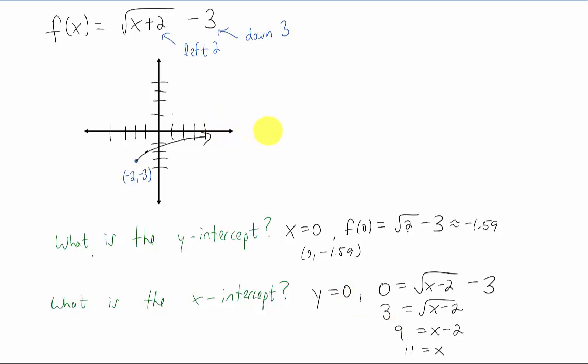So the x-intercept is going to be (11, 0), which is way over here on the graph. And you can kind of see that this square root function will approach somewhere over here. It's going to hit the point (11, 0).